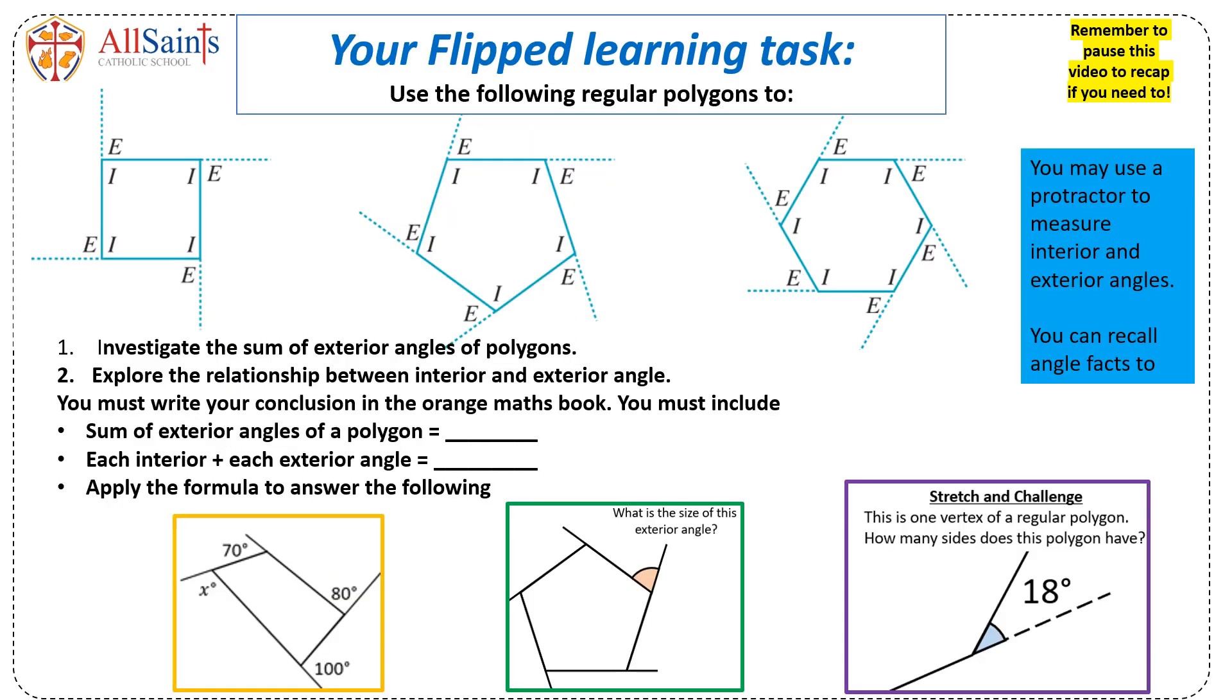You have three polygons given to you on the slide, where exterior angles are marked with an E and interior angles are marked with an I. Use a protractor to measure the interior and exterior angles and write the concluding statements.